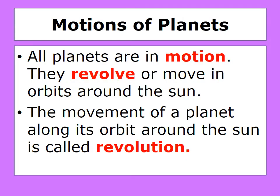All planets are in motion. They revolve, or they move in orbit, around the sun. The movement of a planet along its orbit around the sun is called revolution.